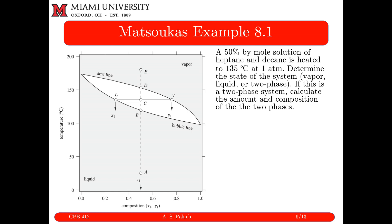Example 8.1: a 50 mol% solution of heptane and decane is heated to 135°C at 1 atm. We need to determine the state of the system — vapor, liquid, or two-phase. The first step is to draw a vertical line at x = 0.5 on the phase diagram, because the total composition of the closed system must stay at 0.5.